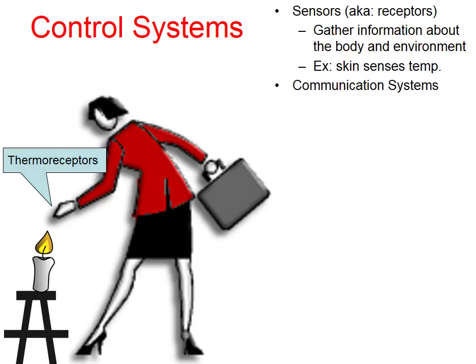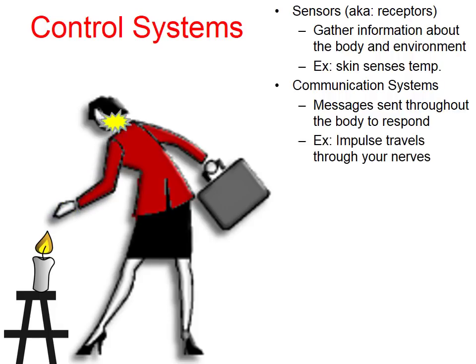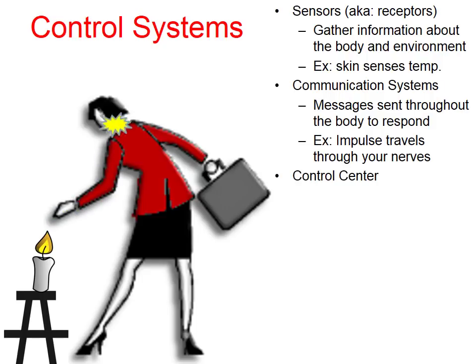Then we have what's called the communication system — a series of nerves where messages will be sent throughout the body. So the nervous system is part of your communication system. In this case, an electrical signal called an impulse is going to travel from the sensors in the woman's hand up to her brain.